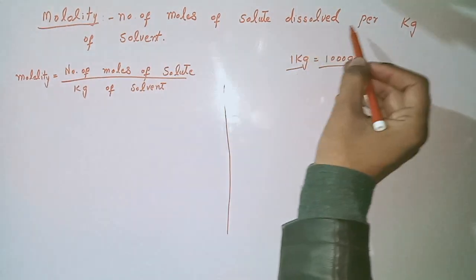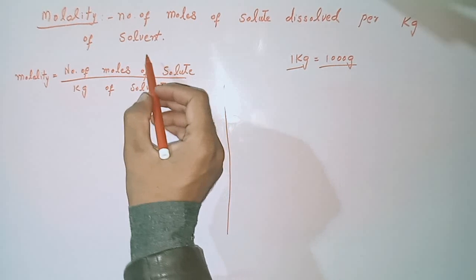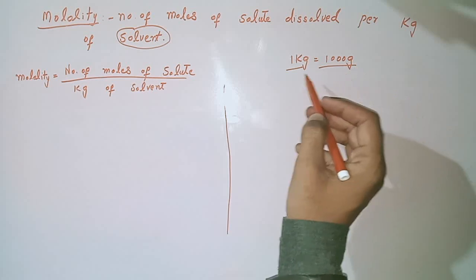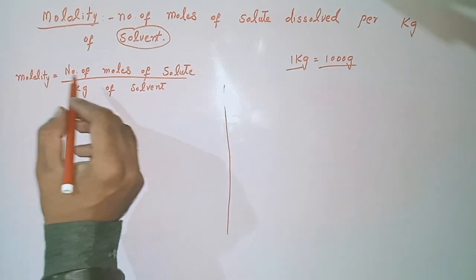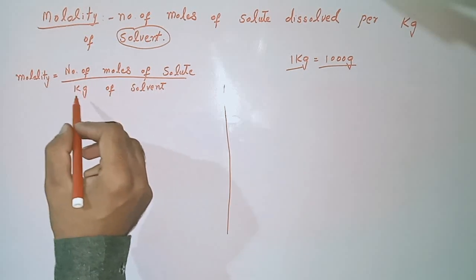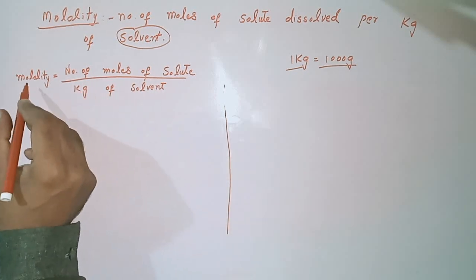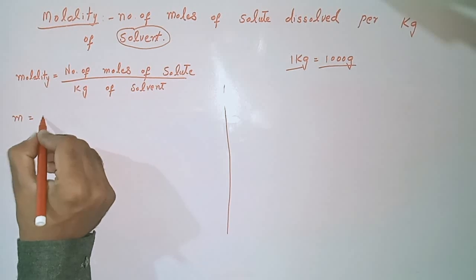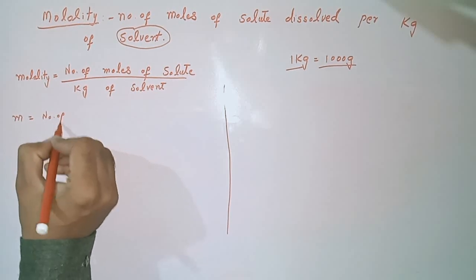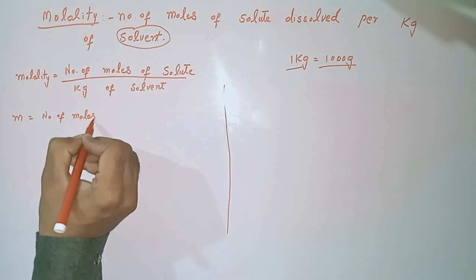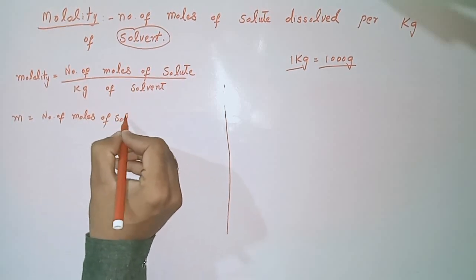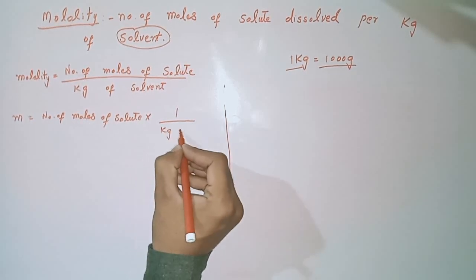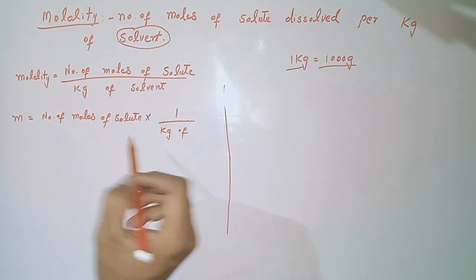Molality is the number of moles of solute dissolved per kilogram of solvent. Here we take one kilogram, meaning one thousand grams of solvent. The formula of molality is: molality equals number of moles of solute divided by kilograms of solvent. Molality is represented by small 'm'. We write: number of moles of solute multiplied by one over kg of solvent.